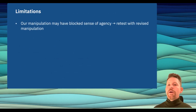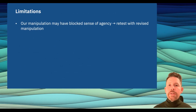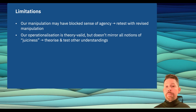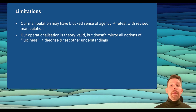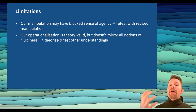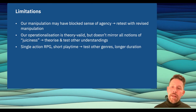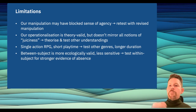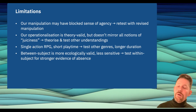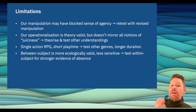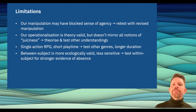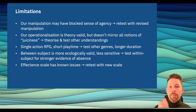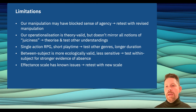What are the limitations of our study? First, our manipulation may have blocked a sense of agency, so we should retest it with a revised manipulation. Second, our operationalizations are valid in terms of our theories, but they don't mirror all notions of juiciness, so researchers interested in different ideas of juiciness should theorize and test those separately. Third, we used a single action RPG with short playtime, so we should test with other genres and longer durations. Finally, between-subject designs like ours are more ecologically valid but less sensitive to subtle effects, so within-subject designs may be warranted, and the effectance scale we used has some known issues — retesting with a different scale might be advised.